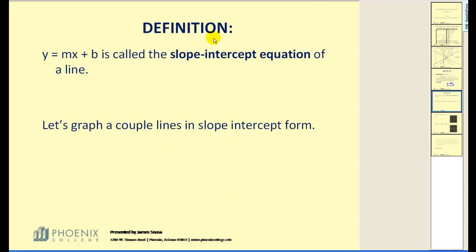Let's take a look at a formal definition. y equals mx plus b is called the slope-intercept equation of a line.